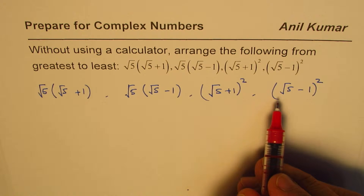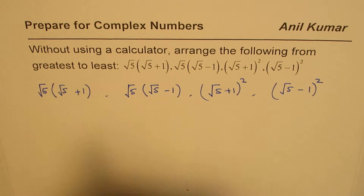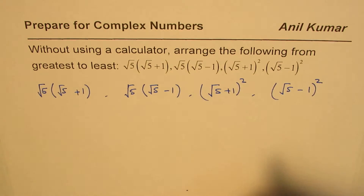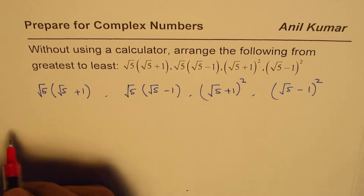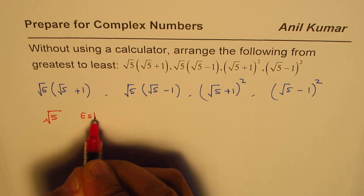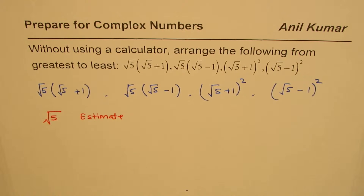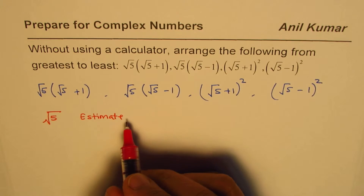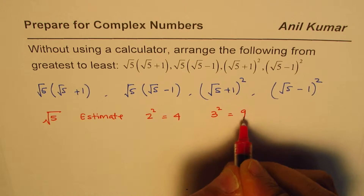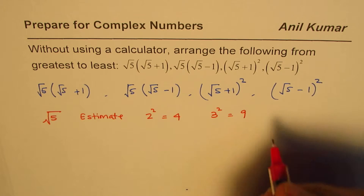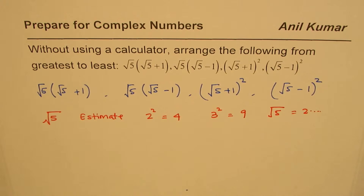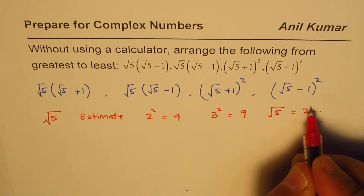One way to approach this is to estimate the value of √5. We know 2²=4 and 3²=9, so √5 is slightly more than 2.